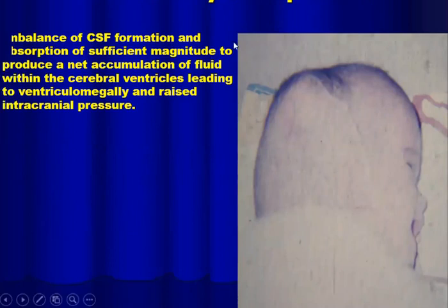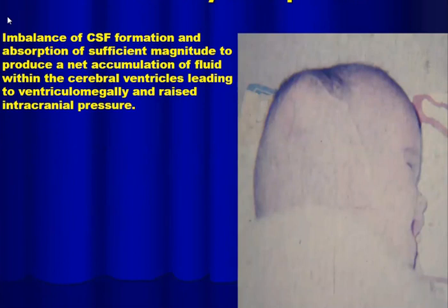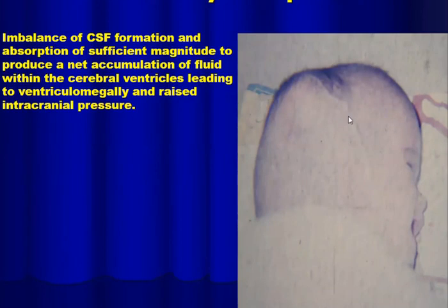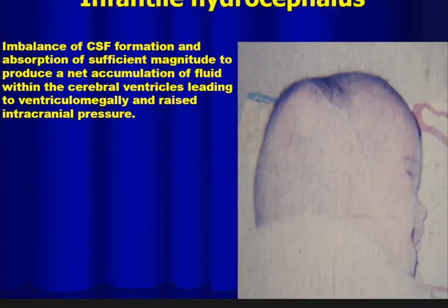Infantile hydrocephalus is another important subject. Hydrocephalus is an imbalance of CSF formation and absorption of sufficient magnitude to produce abnormal accumulation of fluid within the cerebral ventricles, leading to ventriculomegaly and raised intracranial pressure. Signs include a bulging forehead and dilated superficial veins, both indicating raised intracranial pressure due to hydrocephalus.